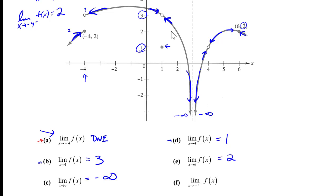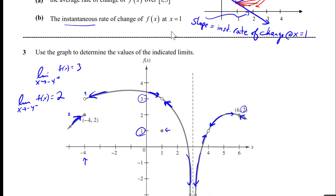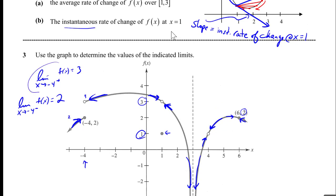The limit as x approaches -4 from the right of f(x) — we did this before — goes to the value 3.